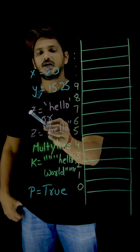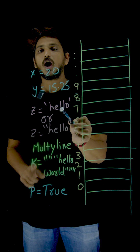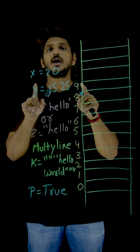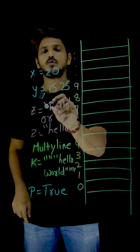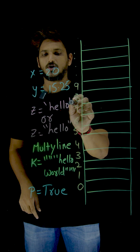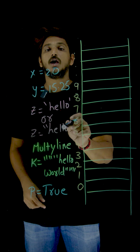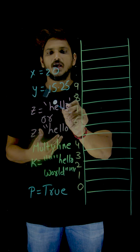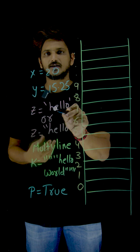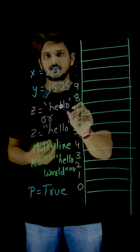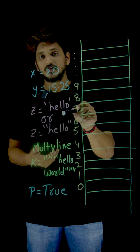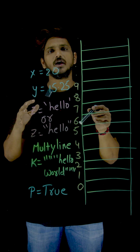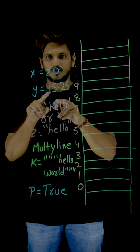Coming to the string data type — Z is equal to hello. Strings have to be mentioned in quotations, single or double quotations. String means sequence of characters: H, E, L, L, O — each one is a character. At the rate symbol is a character, slash is a character, like that.